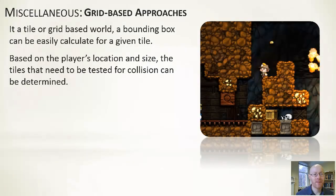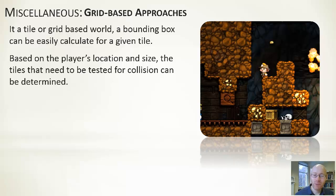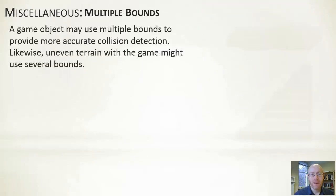A few more aspects to consider for slightly more sophisticated collision detection. First: grid-based approaches. Many 2D games are played on a tile-based grid, and you can use that directly to provide an AABB bounding box for each tile — tiles can be marked impassable or passable. Game objects moving around then compare themselves against the tile map to determine how they interact with it, giving the appearance of solidity within the map.